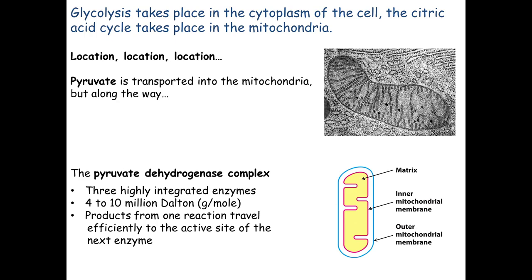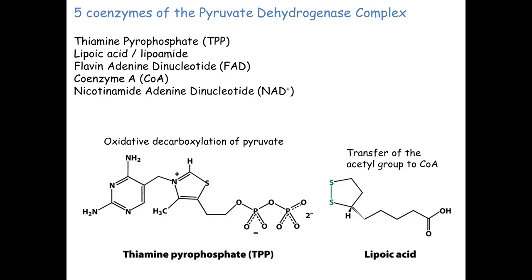This complex is around 4 to 10 million Daltons — a Dalton being a unit of measurement like a hydrogen atom, one gram per mole. It's an enormous complex. Of the five cofactors involved, we've already seen the structure of three: FAD, NAD, and CoA. The latter two — TPP and lipoamide — are something you haven't seen before.